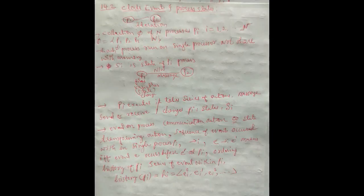Welcome to distributed computing systems. We will now move to the topic of clock events and process states. In a distributed computing system, many computers are connected with each other. Each computer may have a number of processes, and individual processes from one computer communicate with processes on other computers. The collection Xi represents the different processes in the distributed computing system.